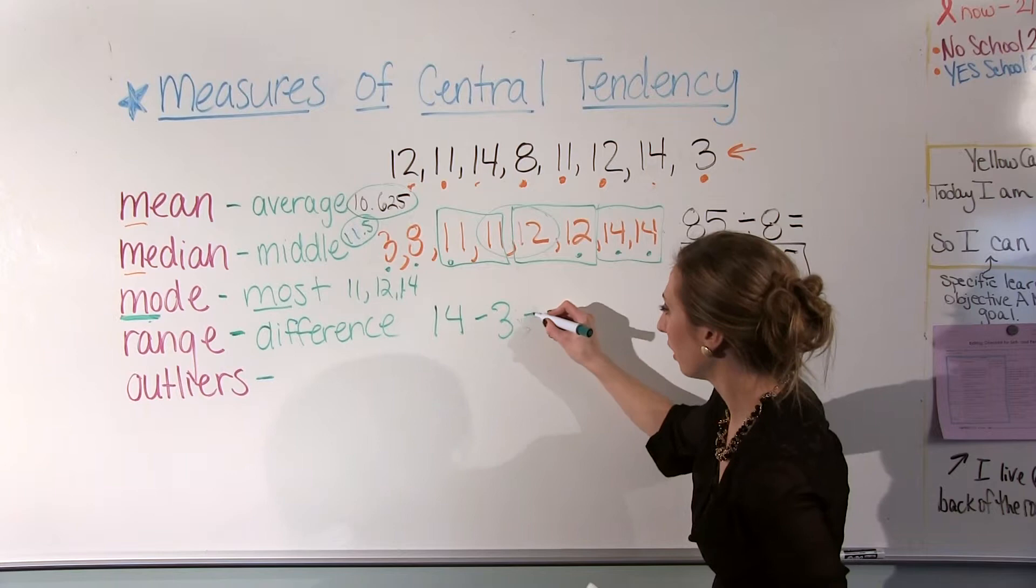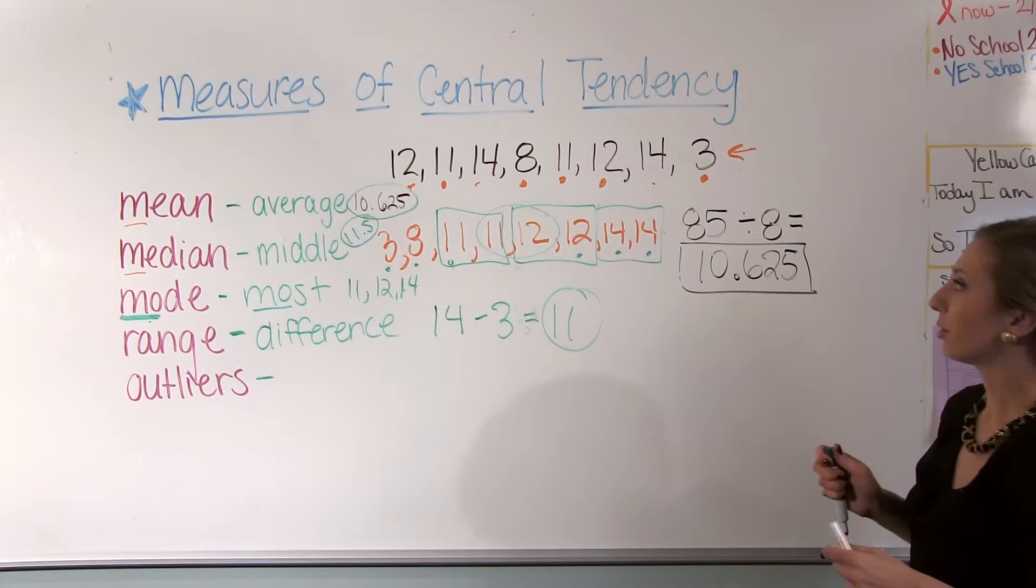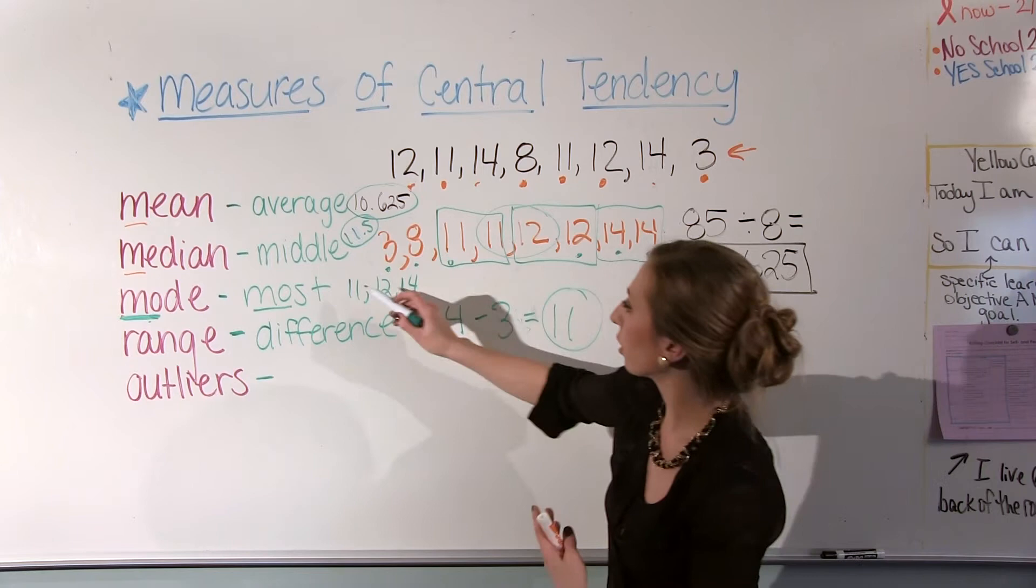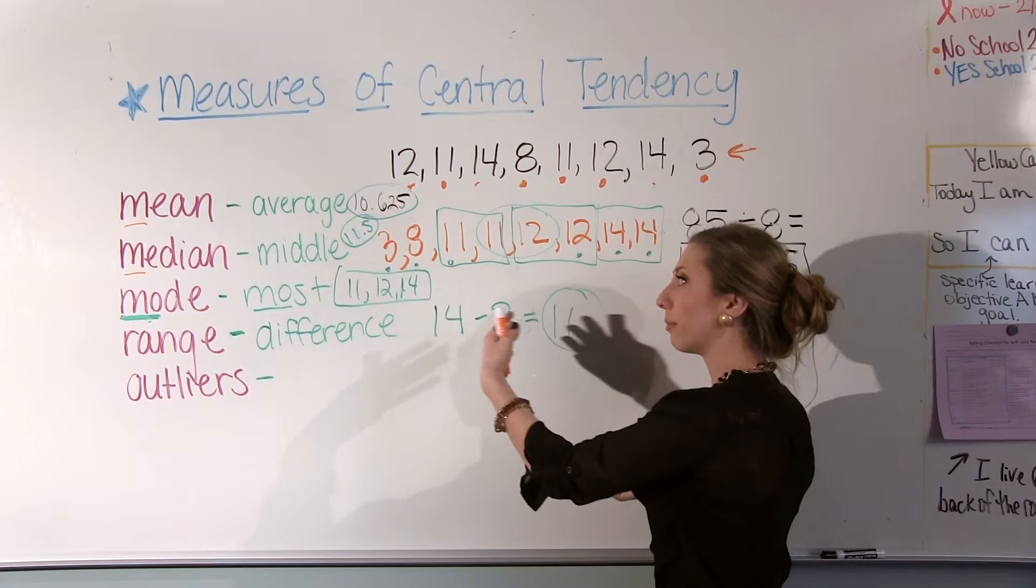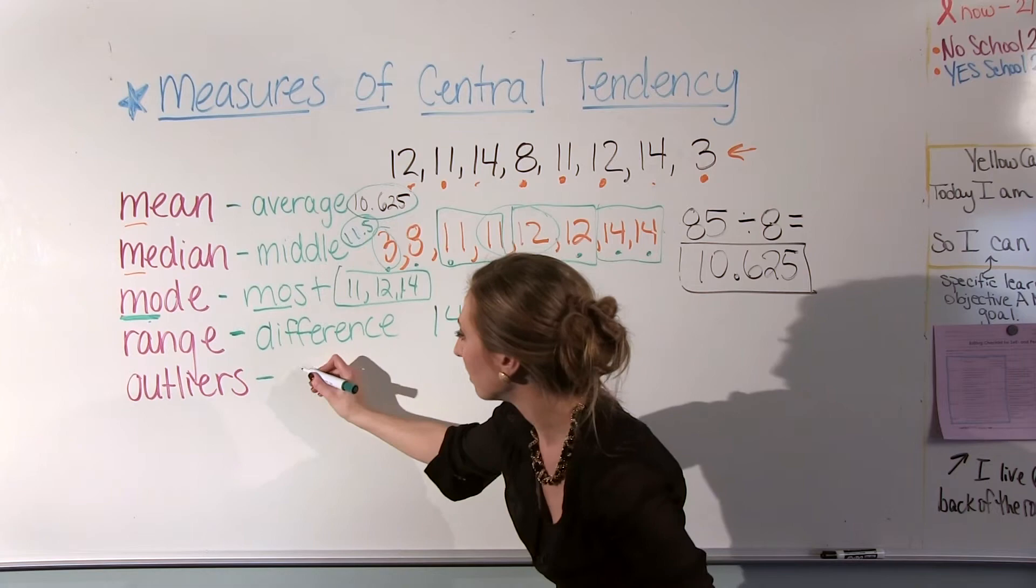Any outliers are going to be numbers that are far away from your data set. What you can do is you can look at your mean, median, mode, and you can see that these are all very close to, you know, they're higher numbers around the number 10. So if you have a number that is very far away from that, that's going to be an outlier. In this case, I'd say that the number 3 is an outlier because it's far away from the rest.